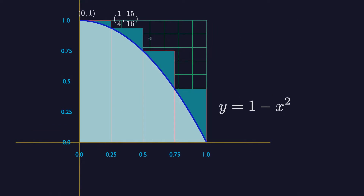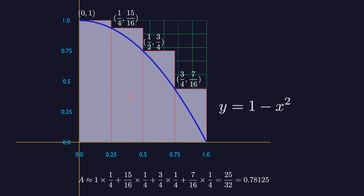Now we improve our estimate by using four thinner rectangles, each of width 1/4, which taken together contain the region R. These four rectangles give a new approximation, which is still greater than the true area.